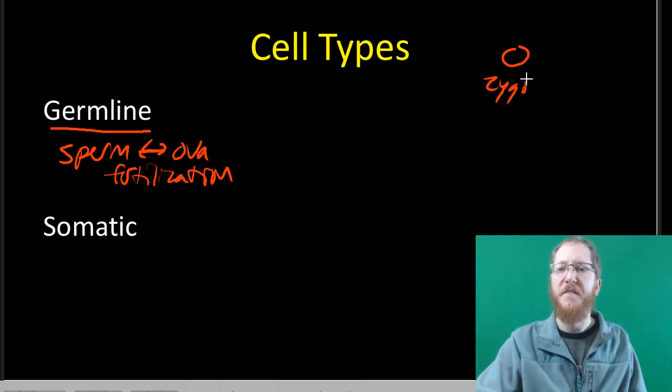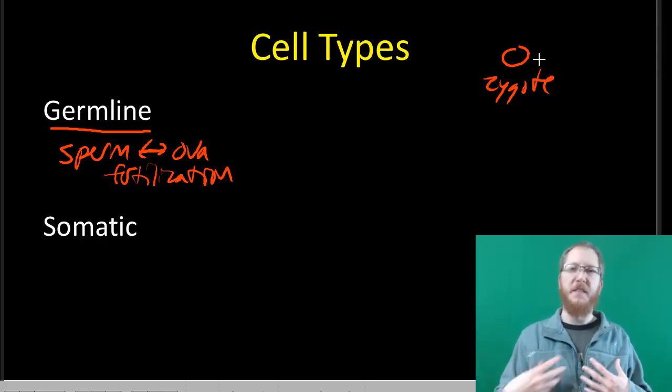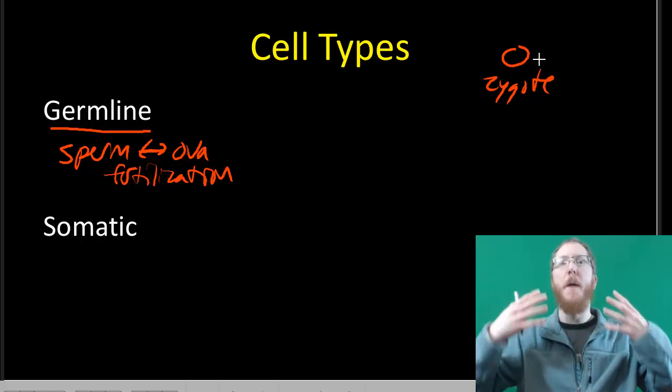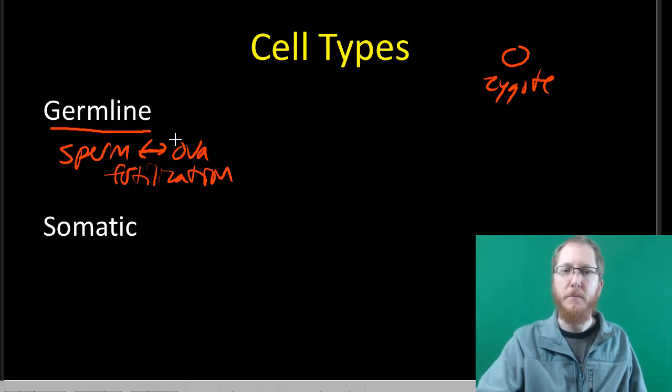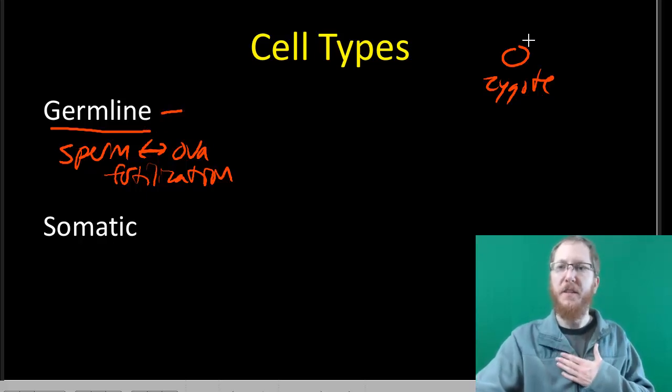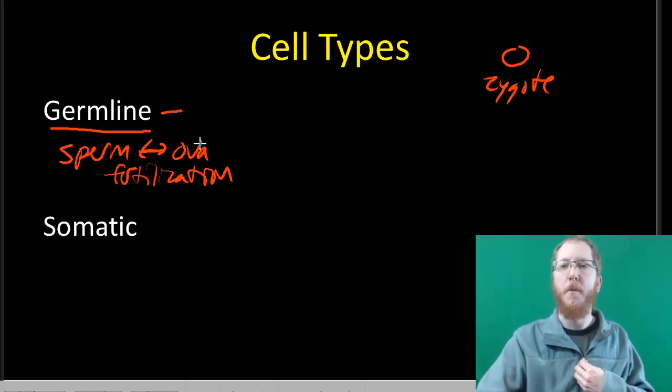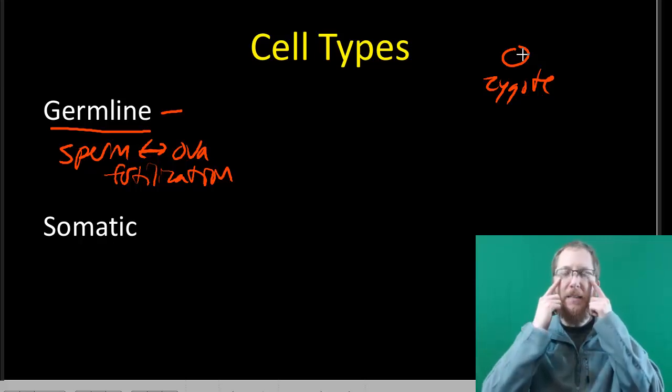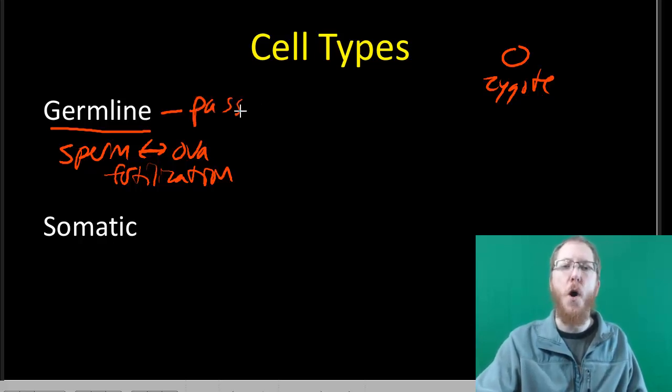Fertilization produces this single cell called the zygote that eventually divides to become whatever we are. As a multicellular organism, this zygote continues dividing until eventually it's produced all the cells in our body right now. If I have a mutation that occurs in the germline, in these early cells, that means the whole organism will have that mutation. If this blue-eyed mutation occurs in a sperm cell, that zygote now has it, and every cell of that organism has it. Its eyes have it, and its own sperm and egg cells can have it.